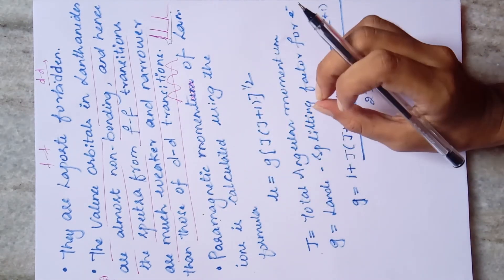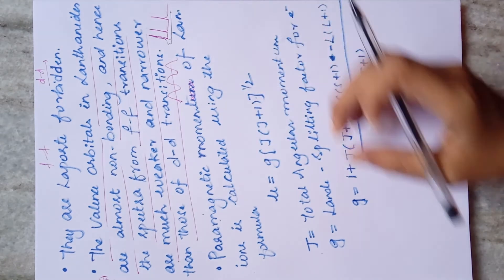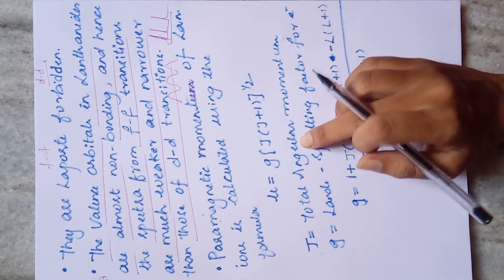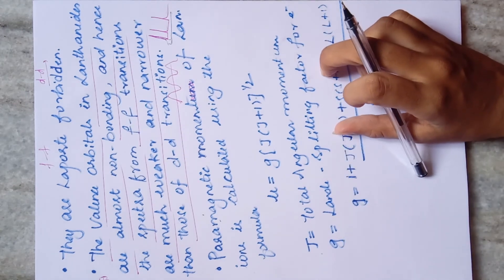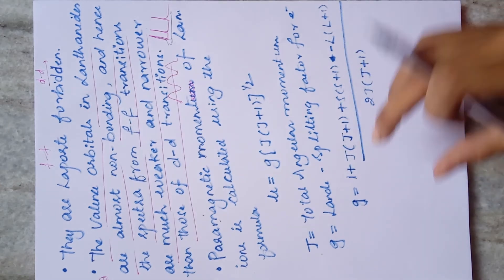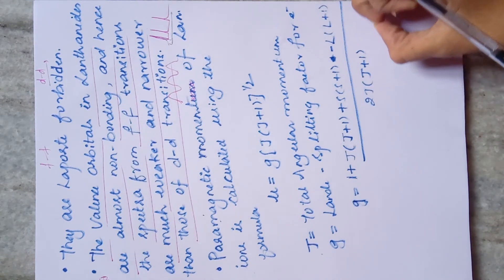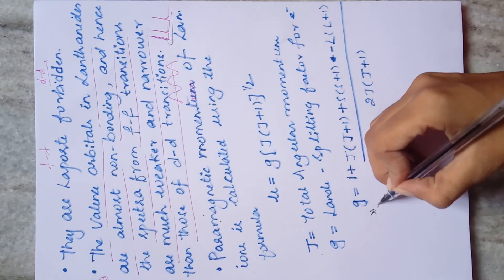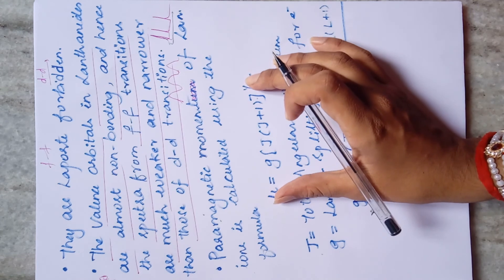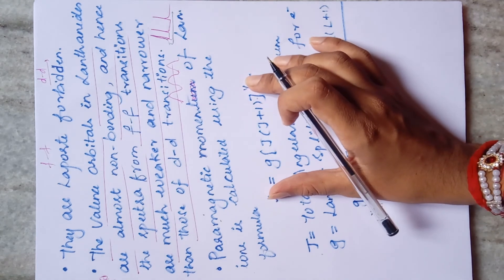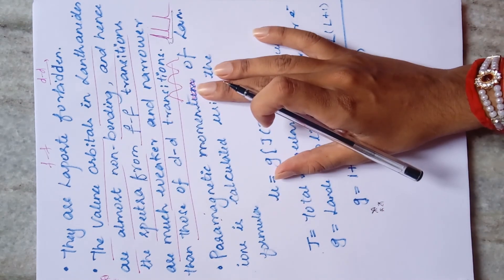The paramagnetic moment of lanthanides is calculated using the formula: μ = g√[J(J+1)], where J is the total angular momentum (calculated as L+S or L−S depending on configuration) and g is the Landé splitting factor, calculated as: g = 1 + [J(J+1) + S(S+1) − L(L+1)] / [2J(J+1)]. Questions based directly on this formula have appeared in exams.